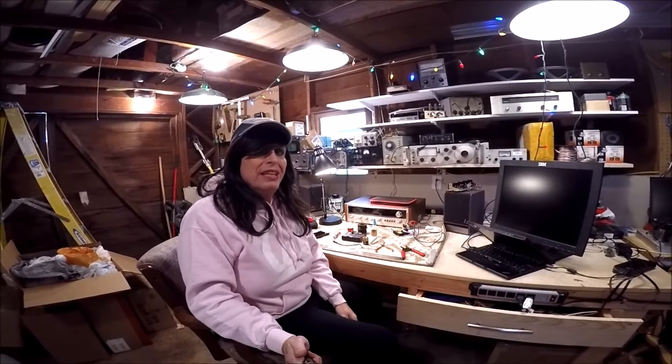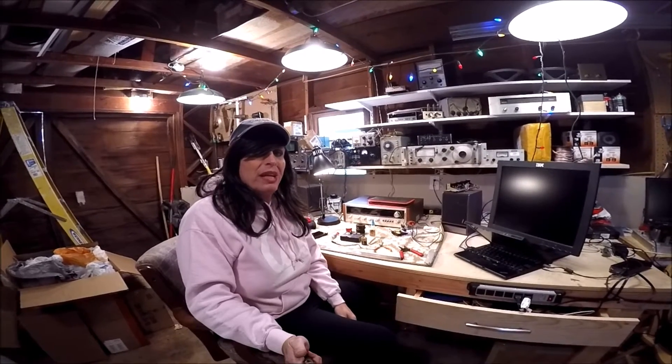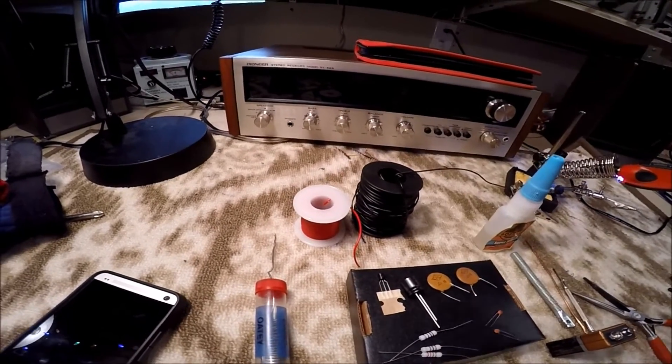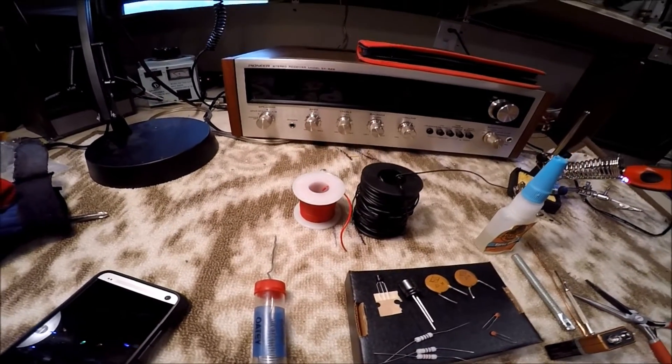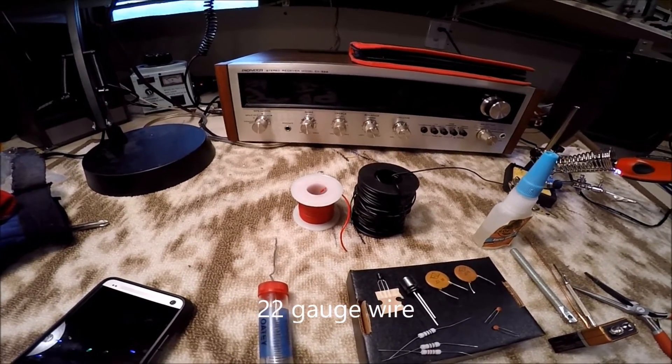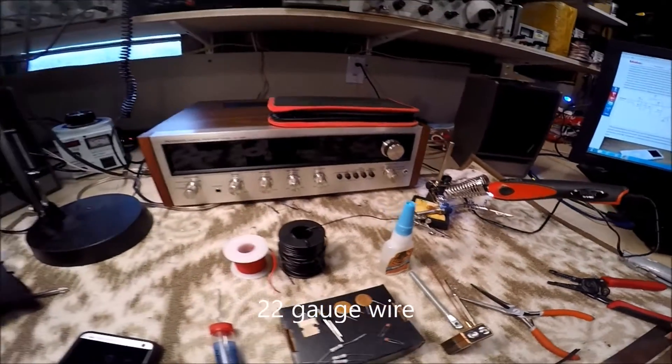Let's come down and see our list of ingredients because you want to have everything in place before you start. First of all, you're going to need some hookup wire. You could use all one color, but I like things sort of coded, red for positive and black for negative, a soldering iron.